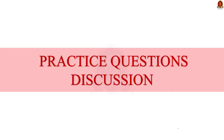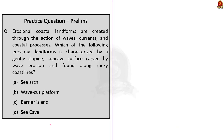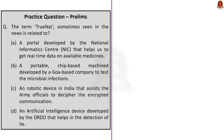With this, we have come to the end of the news article discussion session. Now let us take up the practice prelims questions. The first question: Erosional coastal landforms are created through the action of waves, currents, and coastal processes. Which of the following erosional landforms is characterized by a gently sloping concave surface carved by wave erosion and found along the rocky coastline? The statement describes a wave cut platform. So the correct answer is option B, wave cut platform. Moving on to the next question: The term TrueNAT sometimes seen in the news is related to — from our discussion, the correct answer is option B. TrueNAT is a portable chip-based machine developed by a Goa-based company to test pathogens.